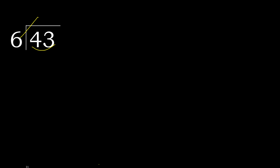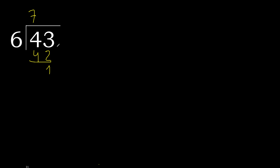6 multiplied by which number is nearest to 43 but not greater? 6 multiplied by 8 is 48 — it's greater. 6 multiplied by 7 is 42 — it's not greater. Ok.